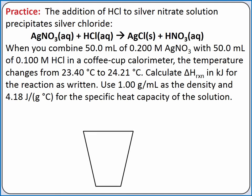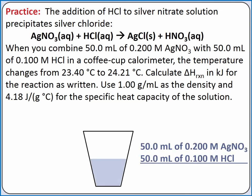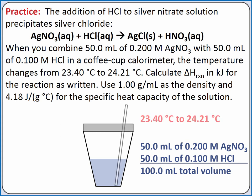Let's start by considering our system. We have a coffee cup calorimeter, and we're adding 50 milliliters of silver nitrate solution to 50 milliliters of HCl solution, and a precipitation reaction is occurring. Since we're given amounts of two different reactants, we'll want to determine which is a limiting reactant. Our total amount of solution in the coffee cup calorimeter is 100 milliliters. The precipitation reaction increases the temperature of the solution, and we want to know the change in enthalpy for the reaction. We can use q = mcΔT to determine how much thermal energy was absorbed by the solution. The energy absorbed by the solution was given off by the reaction, so the heat for the reaction is equal to negative heat of the solution. Then we can use dimensional analysis to take into account the amount of reactions performed based on our limiting reagent.